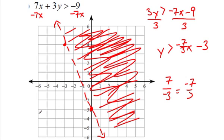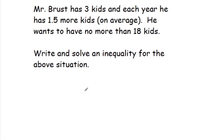Let's do a quick application. Mr. Brust has three kids and each year he has 1.5 more kids on average. He wants to have no more than 18 kids. So let's see. He has three. He's gaining 1.5 more every year. That's a rate of change. And he knows this is 18. Now it says he wants to have no more than 18.